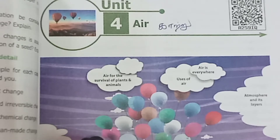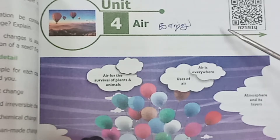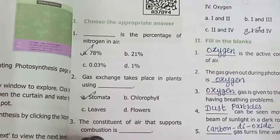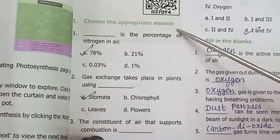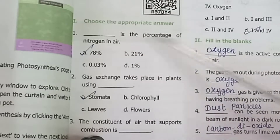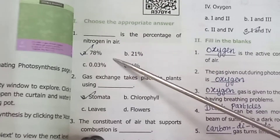Welcome to the standard 6th science, term 2, unit for air and the lesson order, Part 4 video. Book back answers — choose the appropriate answer. The percentage of nitrogen in air is 78%.